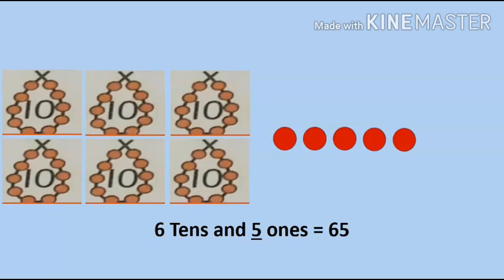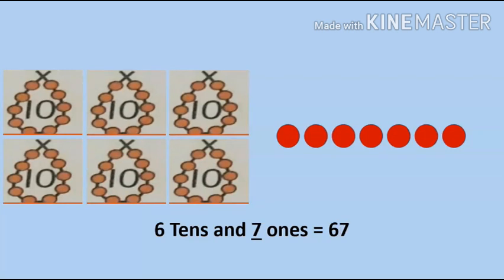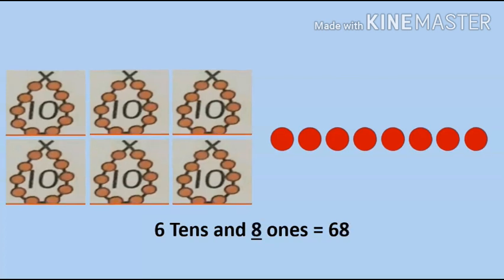Six tens and five ones is equal to 65. Six tens and six ones is equal to 66. Six tens and seven ones is equal to 67. Six tens and eight ones is equal to 68.